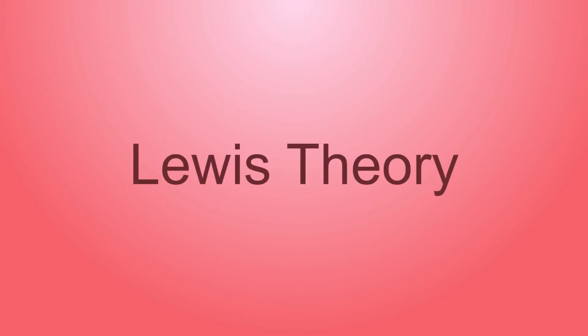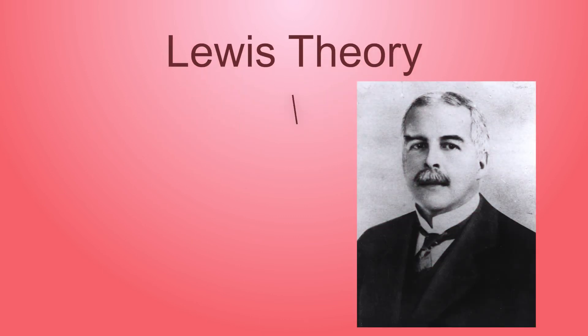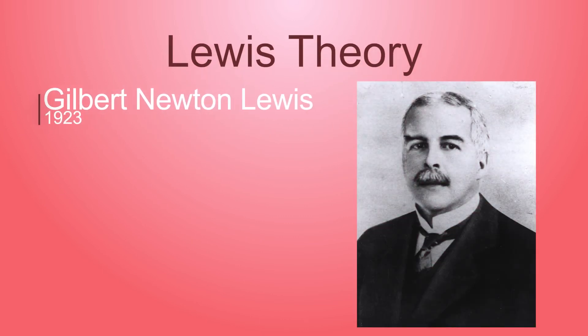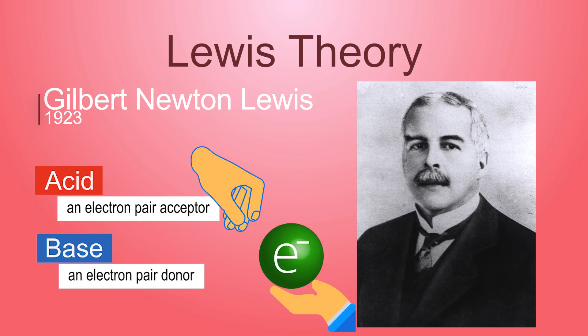In 1923, Gilbert Newton Lewis developed an even more general theory based on the sharing of an electron pair between acids and bases. From his point of view, an acid-base reaction can occur if there is a molecule or ion that can accept electron pairs, and a molecule or ion that can donate electron pairs.